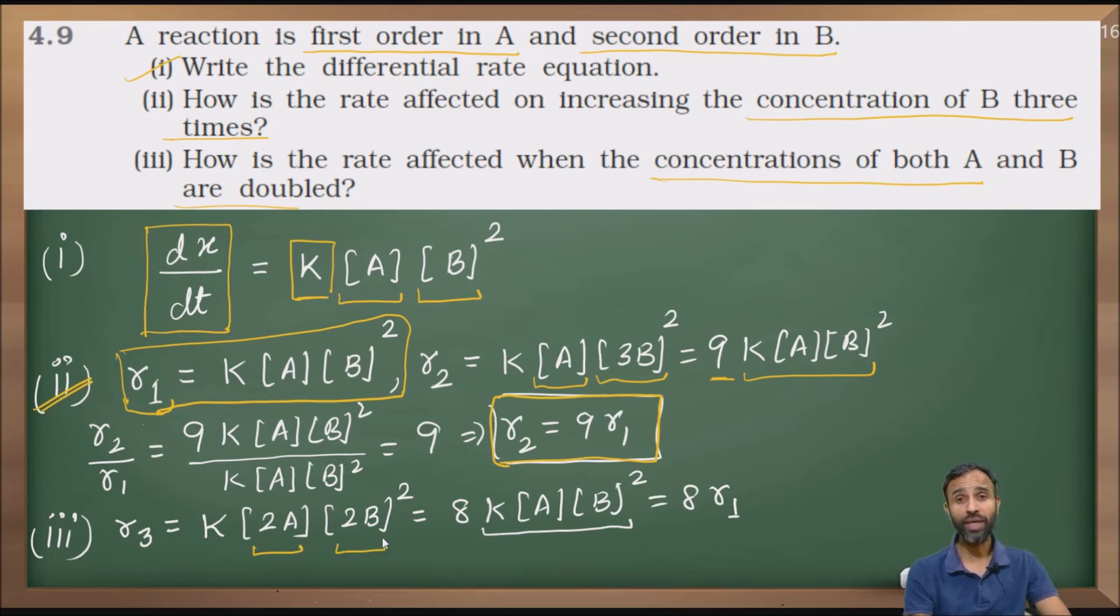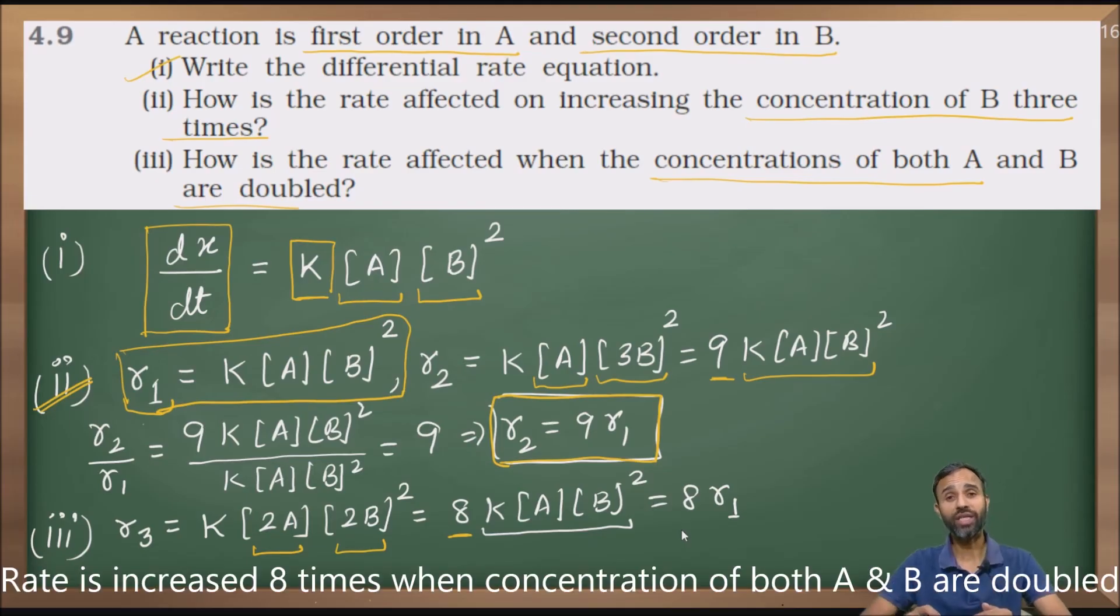B, instead of B, it is 2B because it is doubled. So, 2B raised to power 2. So 2 times 4 is 8. So it is 8 times R1. That means rate is increased by eight times when concentrations of both A and B are doubled.